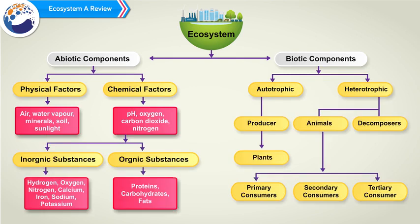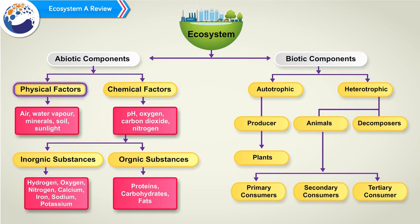Following is the chart showing biotic and abiotic factors. An ecosystem is formed by abiotic components and biotic components. Abiotic components can be of two types: physical factors and chemical factors. Physical factors include air, water, vapor, minerals, soil, and sunlight. Chemical factors include pH, oxygen, carbon dioxide, nitrogen, etc.